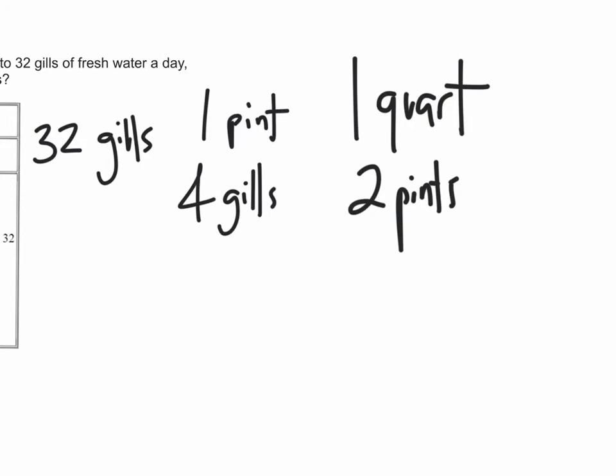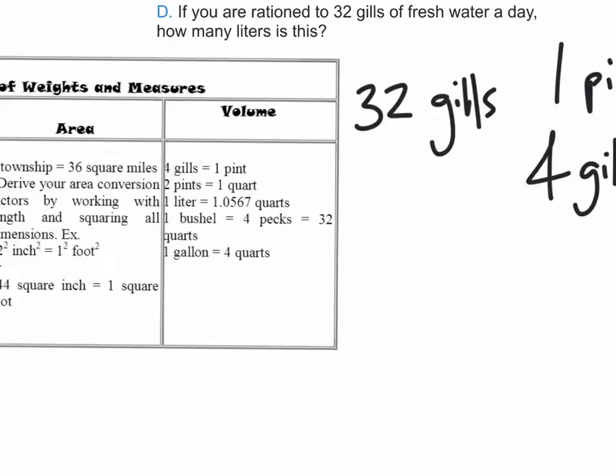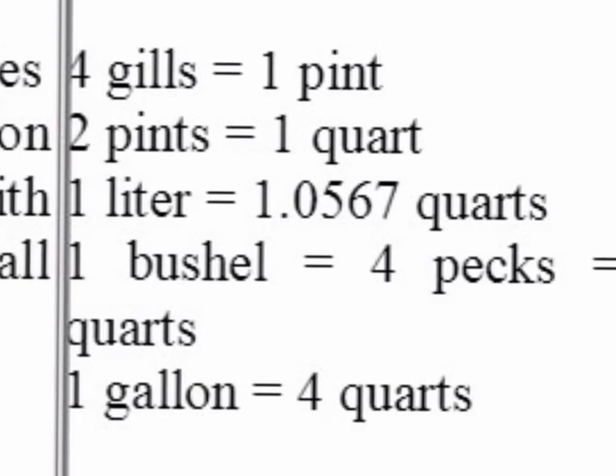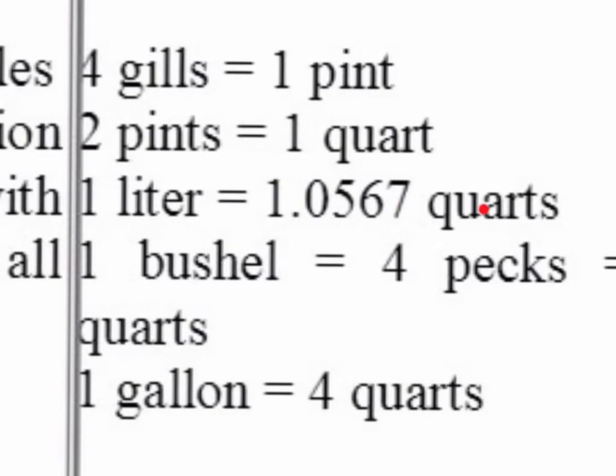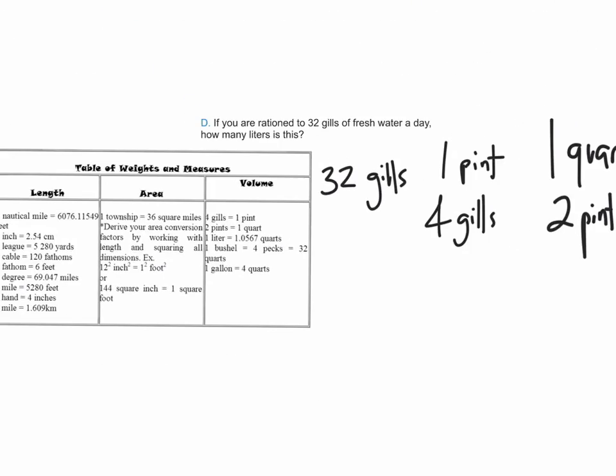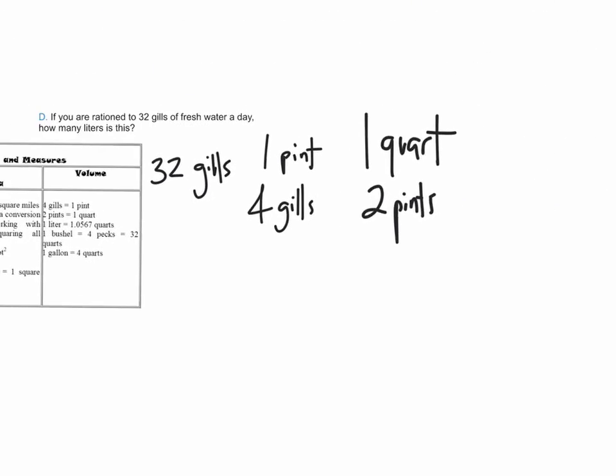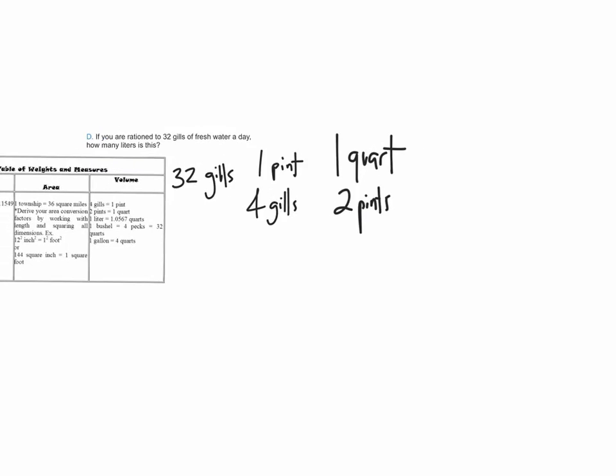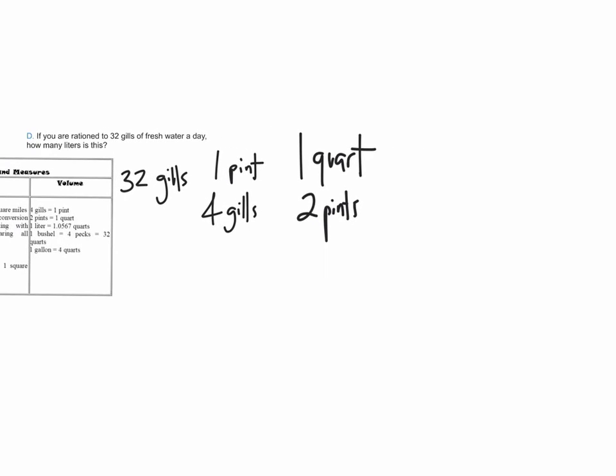And we've got to get to liters. And so how are we going to get to liters? I see that it says 1 liter is equivalent to 1.0567 quarts. So let's try to do that right now. 1.0567 quarts is equivalent to 1 liter. Great.